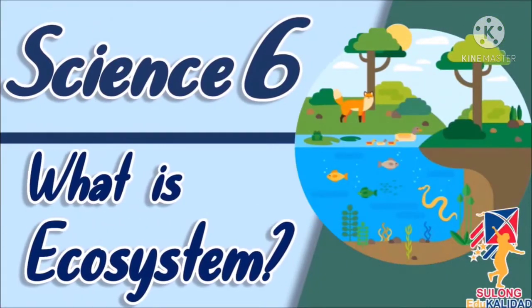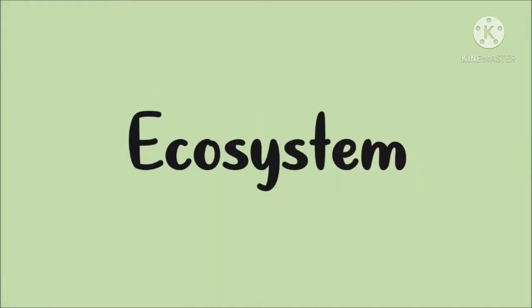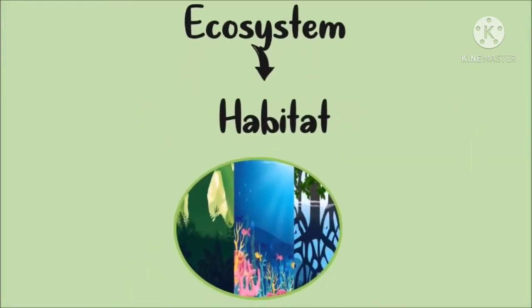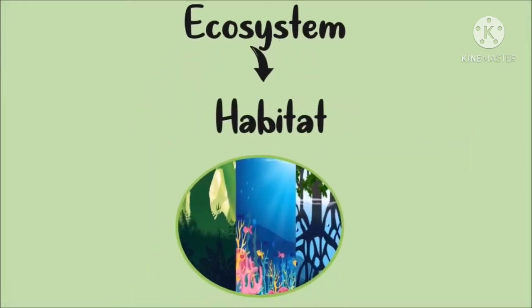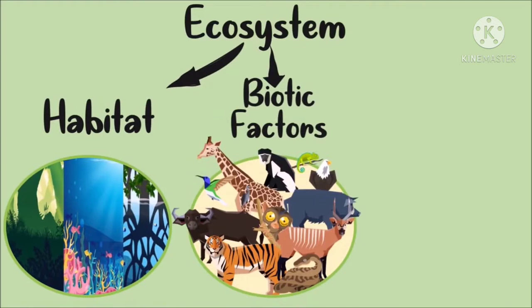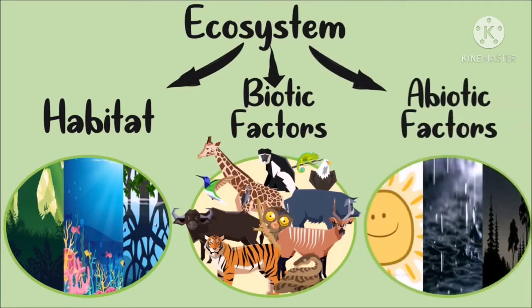What is an ecosystem? An ecosystem is an area or a habitat wherein the biotic factors, or the living things, interact with the non-living things or the abiotic factors, such as the air, water, sunlight, temperature, and soil.